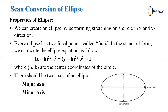Ellipse has different properties. We can create an ellipse by performing stretching on a circle in the x and y directions. Every ellipse has two focal points called foci. In standard form, the ellipse equation is: (x - h)²/a² + (y - k)²/b² = 1, where h and k are the center coordinates. Here a is the major axis and b is the minor axis, which divide the ellipse into four different parts.